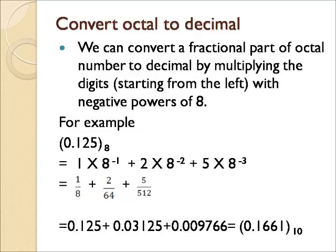That is 1 into 8⁻¹, plus 2 into 8⁻², plus 5 into 8⁻³, which can be written as 1/8 plus 2/64 plus 5/512. It is better to use a calculator for this. We will be getting the answer as 0.1661 to the base 10 as the equivalent decimal.